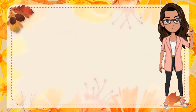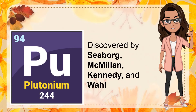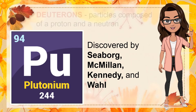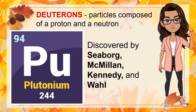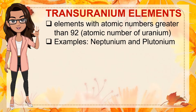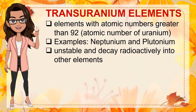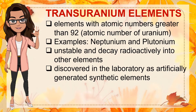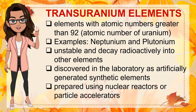At the end of 1940, element 94 was synthesized by Seaborg, McMillan, Kennedy, and Wahl. They bombarded uranium with deuterons — particles composed of a proton and a neutron — in a cyclotron. Element 94 was named plutonium. Elements with atomic numbers greater than 92, the atomic number of uranium, are called transuranium elements. Hence, neptunium and plutonium are both transuranium elements. They are unstable and decay radioactively into other elements. All of these elements were discovered in the laboratory as artificially generated synthetic elements, prepared using nuclear reactors or particle accelerators.